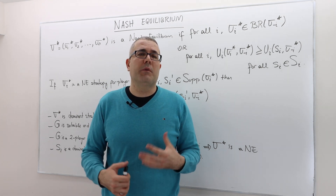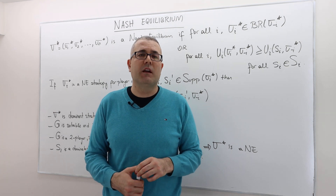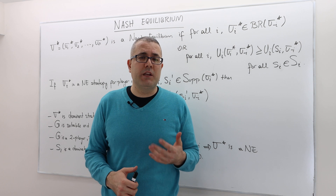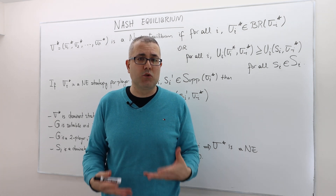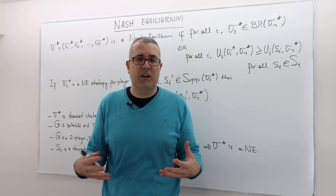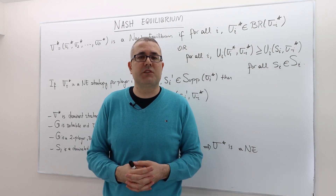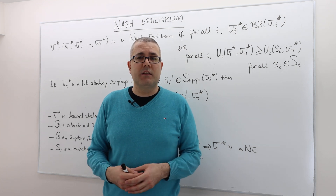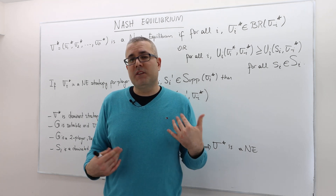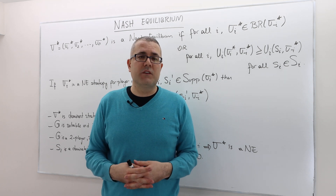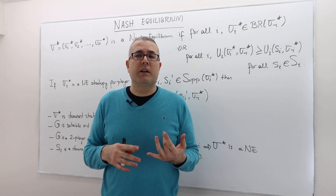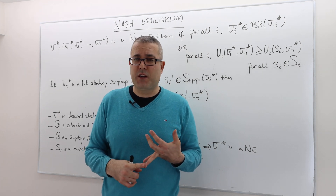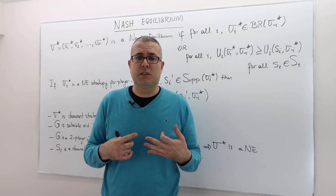Dominant strategy equilibrium is very strong, but it's too demanding. So many games do not have dominant strategy equilibrium. And then we talked about iterated elimination of strictly dominated strategies. If the game is solvable, then the resulting profile of strategies is the solution. So that's the third solution concept. And this is the fourth one. We need it because many games are non-zero-sum and many games do not have dominant strategy equilibrium, or many games are not solvable.